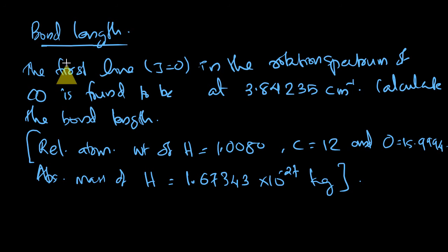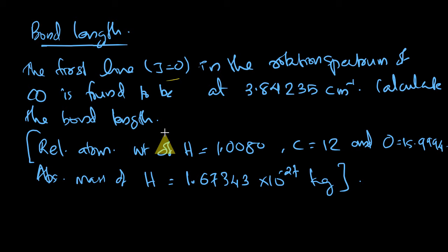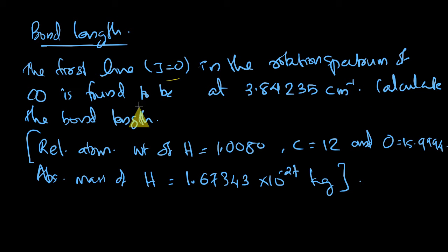The problem is that the first line, that is the line originating from the J equals zero state in the rotation spectrum of carbon monoxide, is found to be at 3.84235 centimeter inverse. Calculate the bond length. I recommend you take your notebook and write this question there.